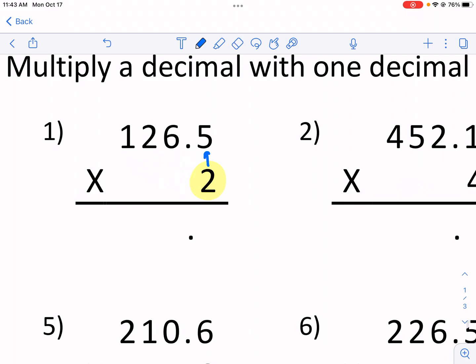Let me show you and we'll go in turn with each one of these. So the first is we do 2 times 5 and that's 10. We can't just write the whole 10 there. So you write the 0.